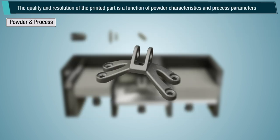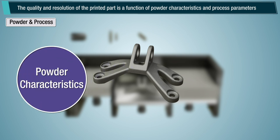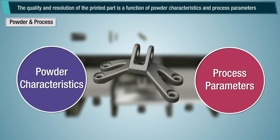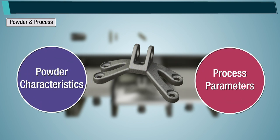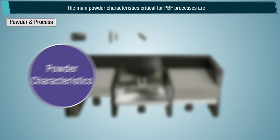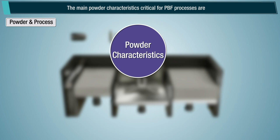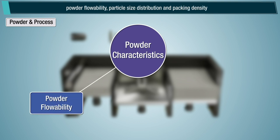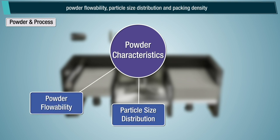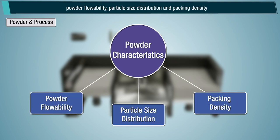The quality and resolution of the printed part is a function of powder characteristics and process parameters. The main powder characteristics critical for PBF processes are powder flowability, particle size distribution, and packing density.